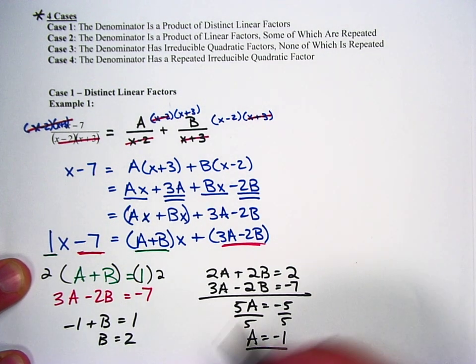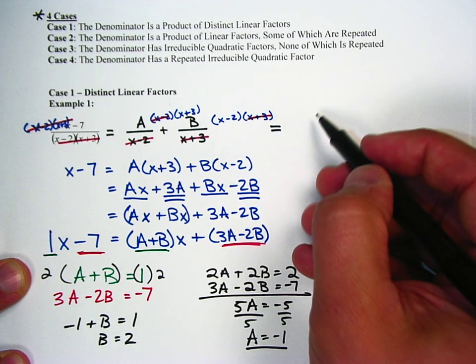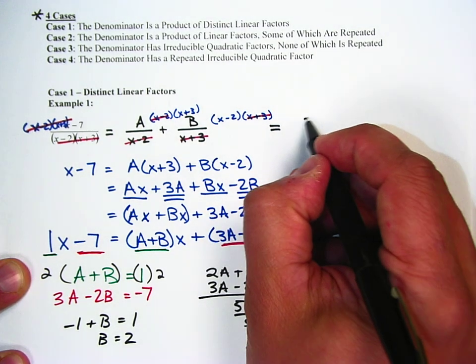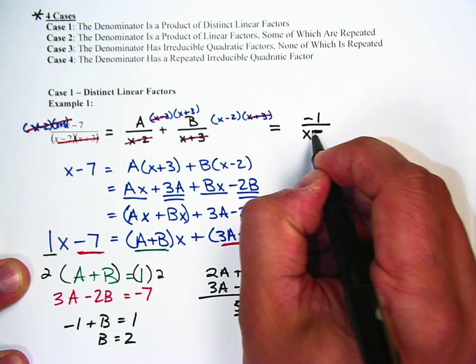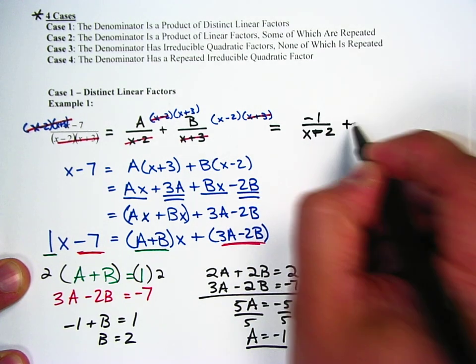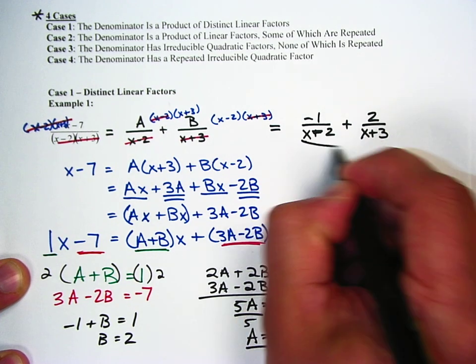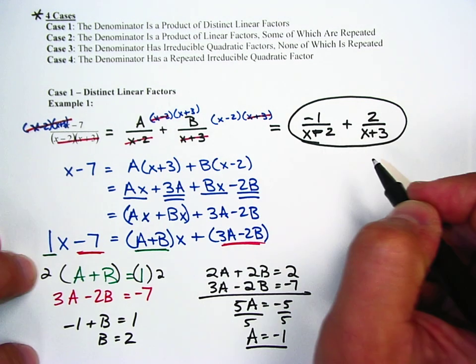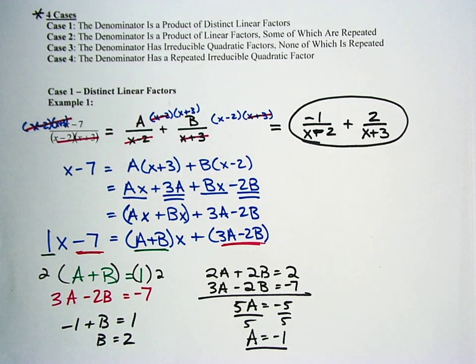To finish this up, I'm going to go back up to my original equation, and I got A over x minus 2. Well, A is negative 1. So it's negative 1 over x minus 2 plus B is 2. So 2 over x plus 3. That's the partial fraction decomposition of x minus 7 over x minus 2 times x plus 3.